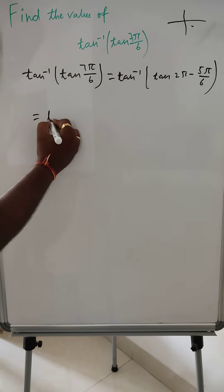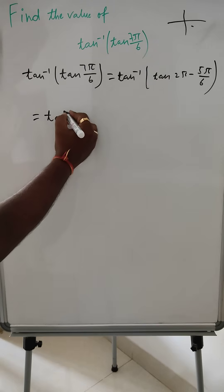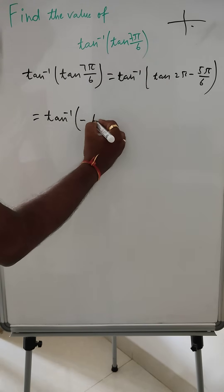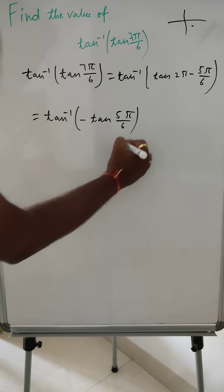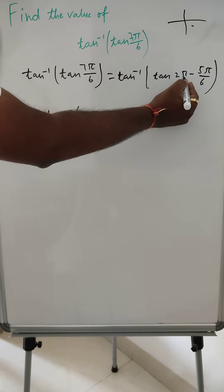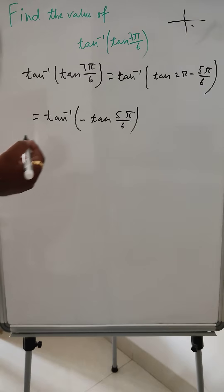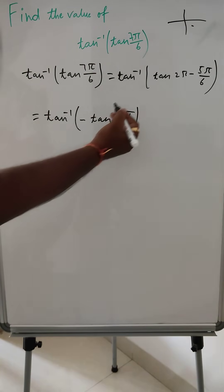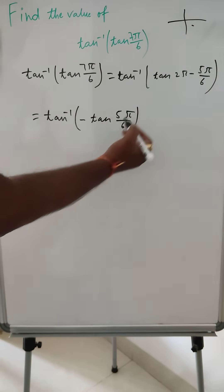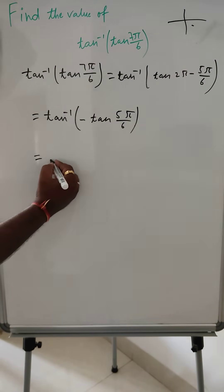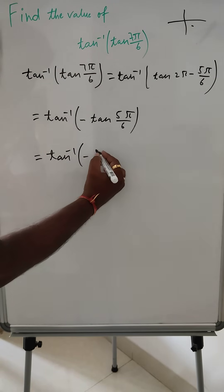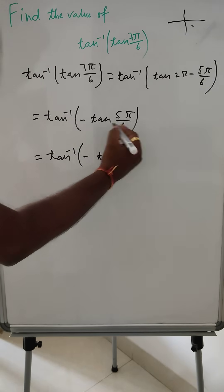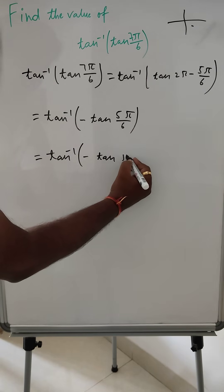Since it's in the fourth quadrant, it will be negative, so we can write tan⁻¹(-tan(5π/6)). This 2π is an even multiple, so there will be no change — tan will remain the same. It is in the fourth quadrant, so it will be minus. Now we can write tan inverse minus tan(π - π/6).